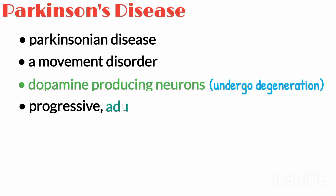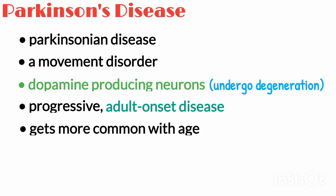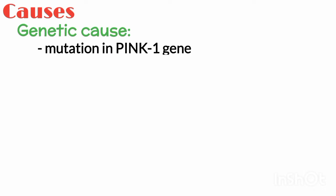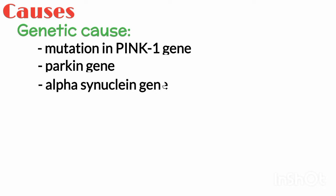Parkinson's is a progressive adult-onset disease. It gets more common with age and is one of the most common neurological disorders. Most of the time there's no known cause, but in some cases there may be a genetic cause, like mutations in the PINK1, Parkin, or alpha-synuclein genes.